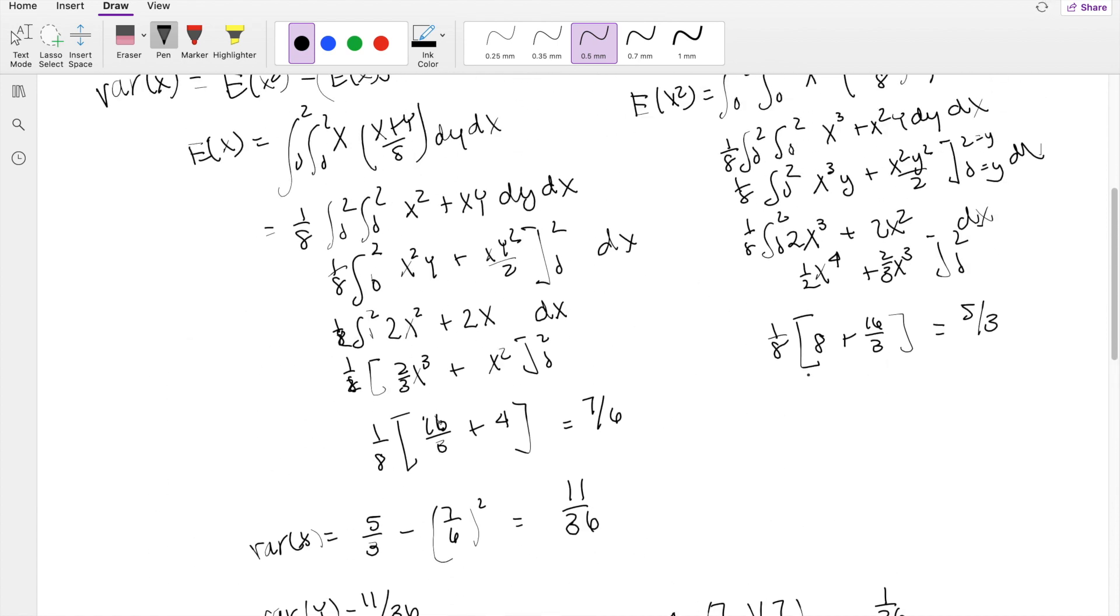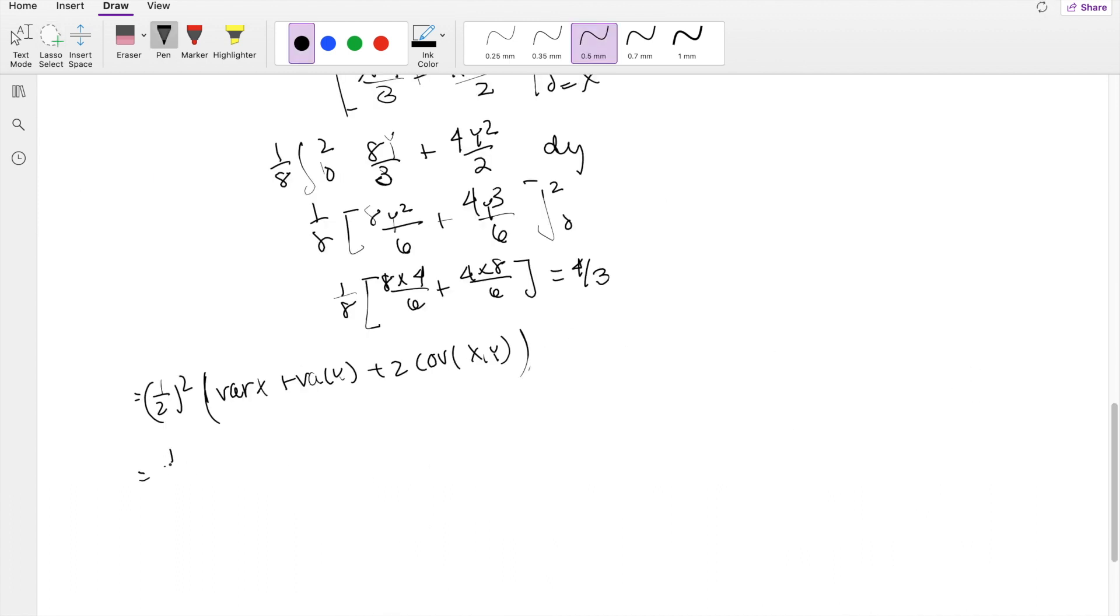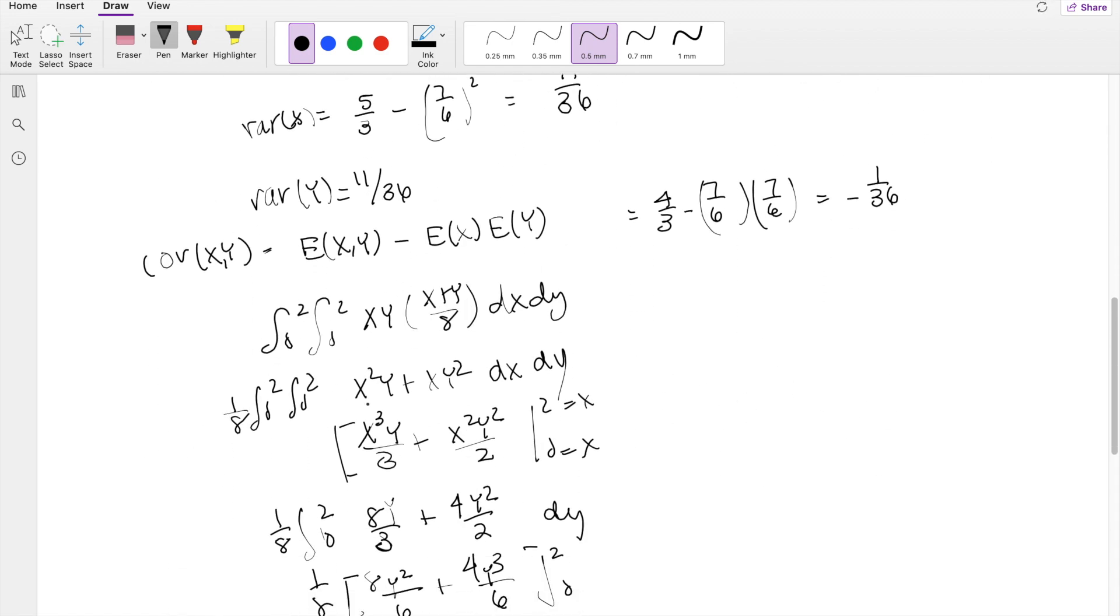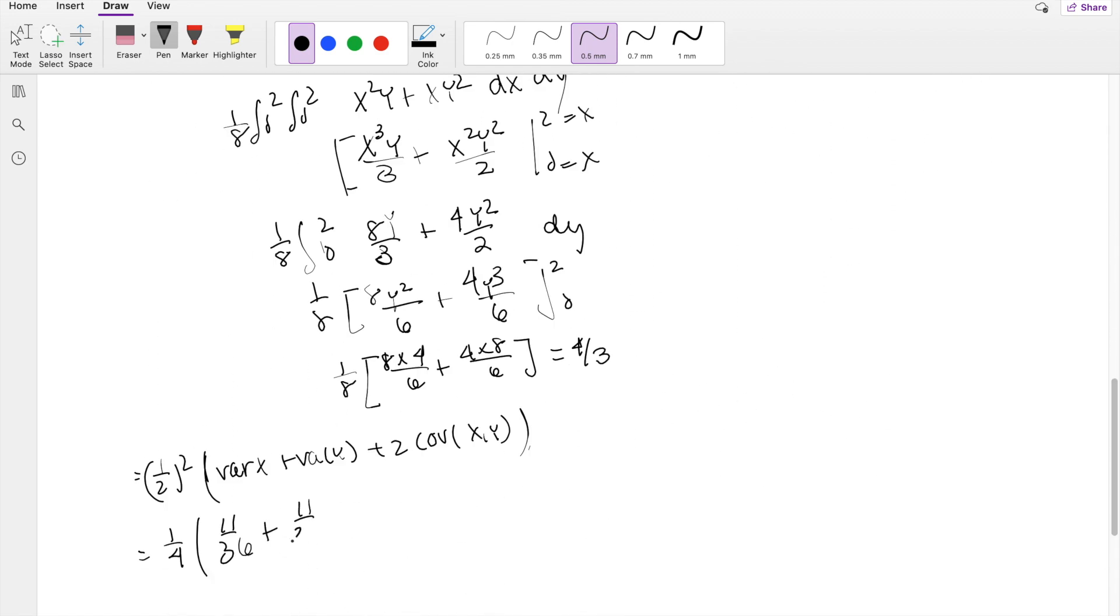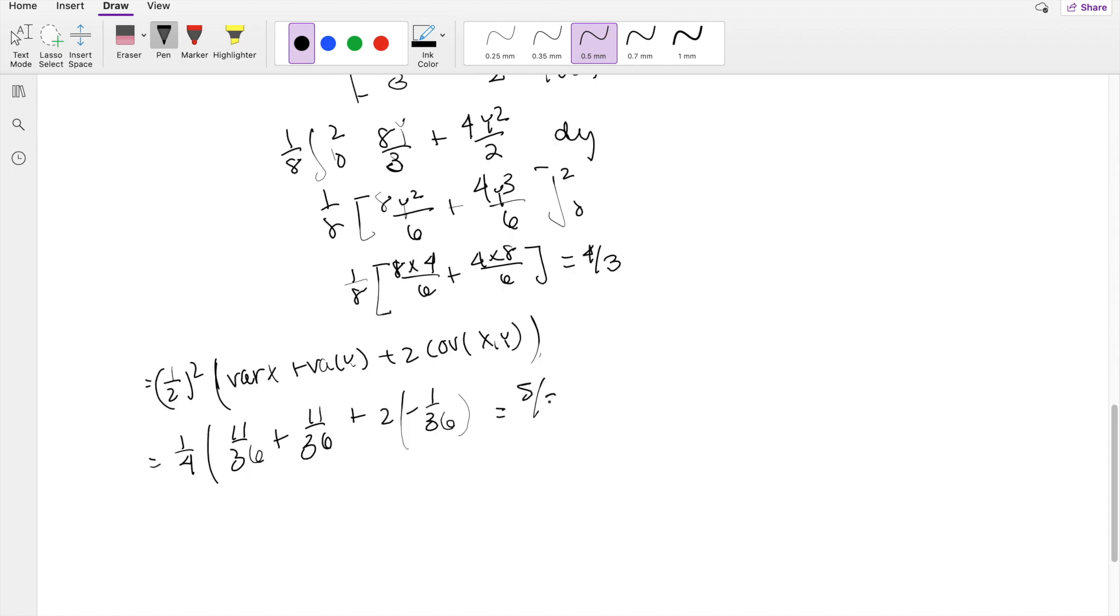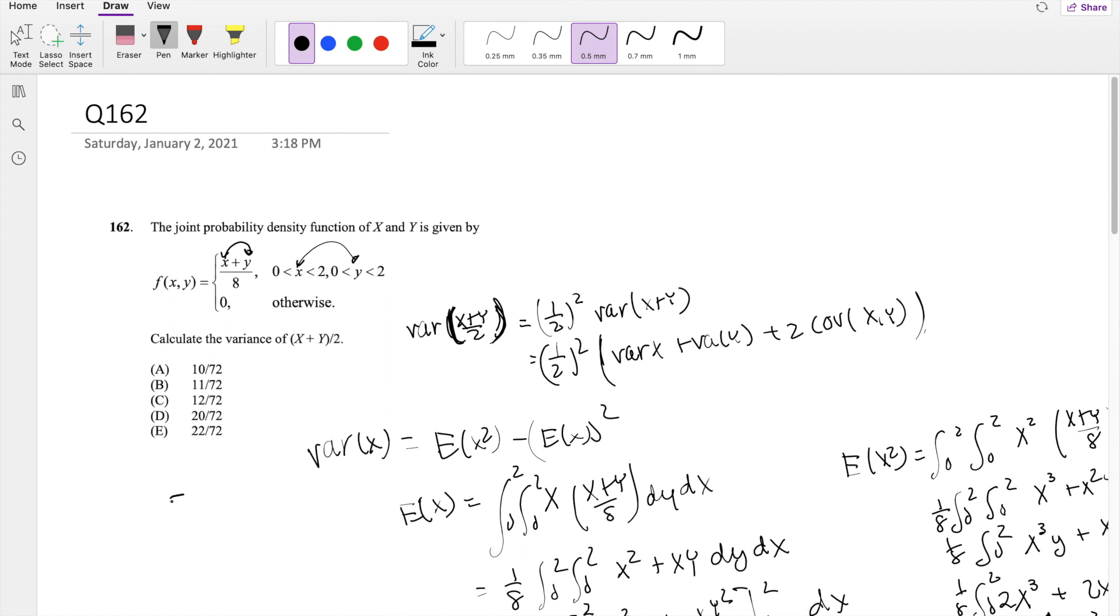We just plug it back into the formula. This equals 1/4 times variance of x, which is 11/36, plus 11/36, plus 2 times the covariance, which is negative 1/36. This equals 5/36, which is the same as 10/72, which is answer A.